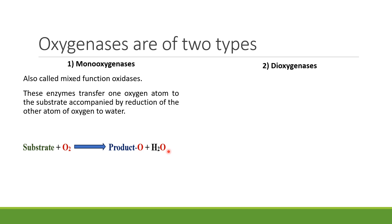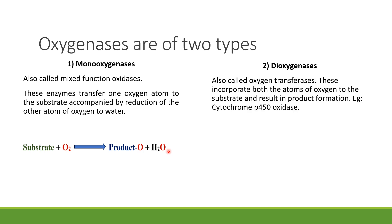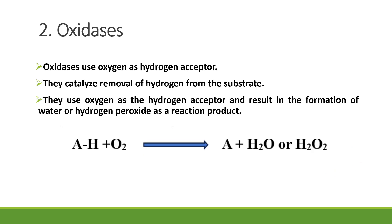So here, if this is the substrate and this is the oxygen molecule, the product formed has just one oxygen atom, while the other oxygen atom is reduced to form water. The next category is dioxygenases — these are also oxygen transferases, but here both oxygen atoms are incorporated into the substrate to form the product. One best example is the reaction catalyzed by cytochrome P450 oxidase.